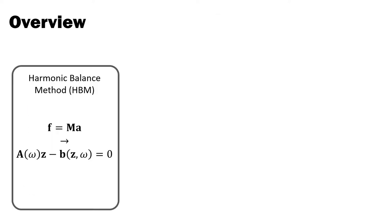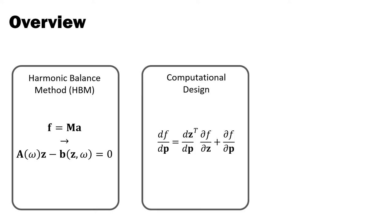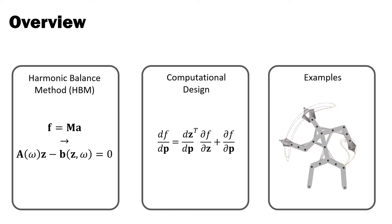To describe our method, I'll start with a brief outline of the harmonic balance method and explain how to obtain the governing equations of motion in frequency space. We'll then talk about computational design based on HBM, looking at design objectives and at how to compute derivatives of steady state motion with respect to design parameters. Finally, we will look at examples that illustrate how these components can be combined for forward and inverse design tasks.